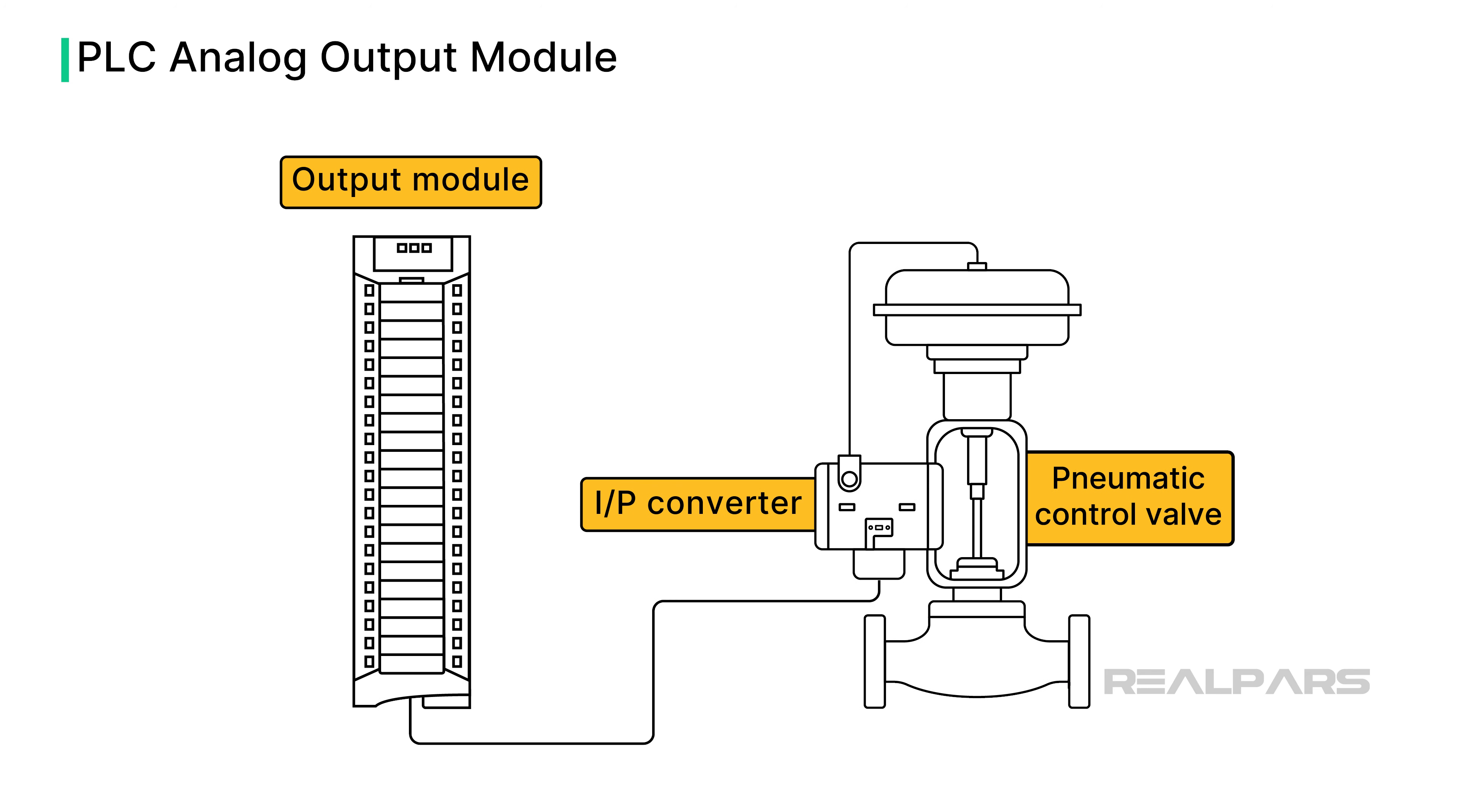For example, a pneumatic valve is operated by a current-to-pressure converter, or I-to-P converter, that receives an analog control signal from a PLC output module.